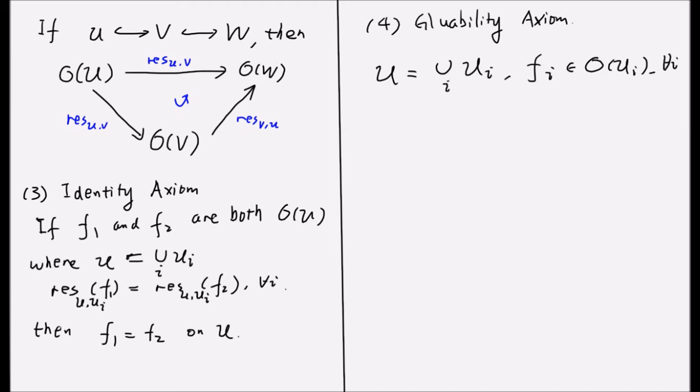and f_i is contained in the ring O(U_i), satisfying that the restriction of f_i from U_i to U_i ∩ U_j is equal to the restriction from U_j to U_i ∩ U_j of f_j for any two indices i and j.